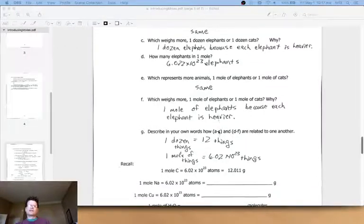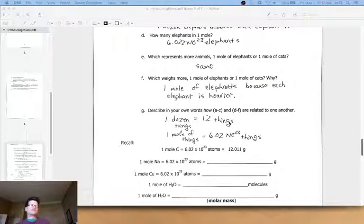So the connection we're trying to make here is a dozen things is always 12 things. It doesn't matter how heavy they are. And so a mole of things is always 6.02 times 10 to the 23rd things. It doesn't matter what they are or how heavy they are. A mole of carbon is that many atoms and it weighs that much. A mole of sodium will be that same number of atoms, but the weight will be different because sodium is different from carbon.